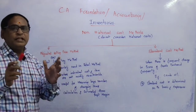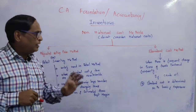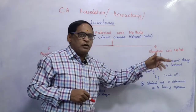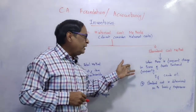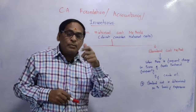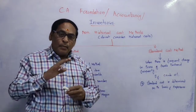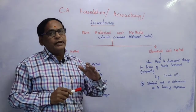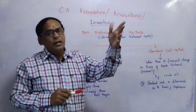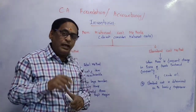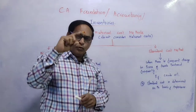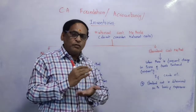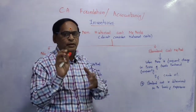This method involves the calculation of the estimated gross profit margin to find the value of inventory. The second non-historical method is the Standard Cost Method. The Standard Cost Method is used when there is a frequent change in the price of the product, and it provides a standard cost value.